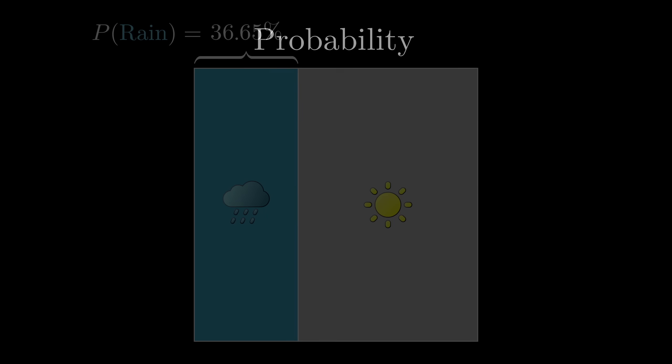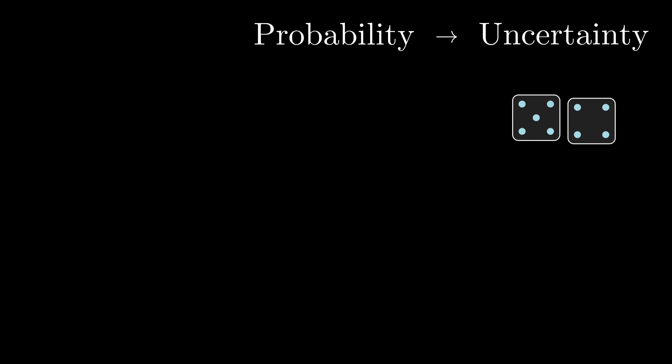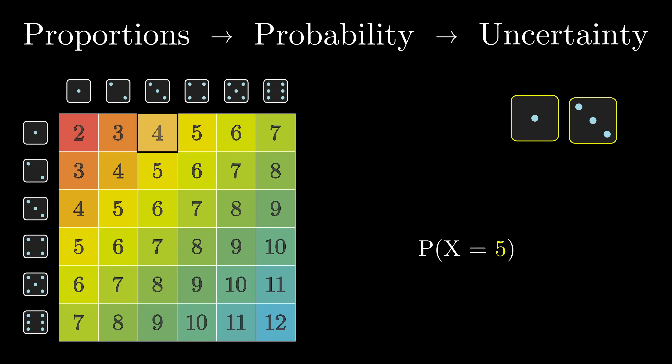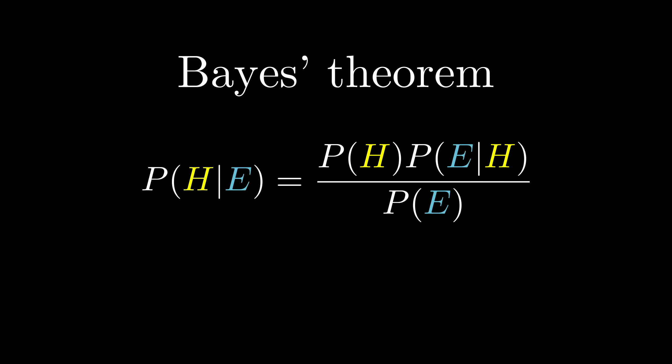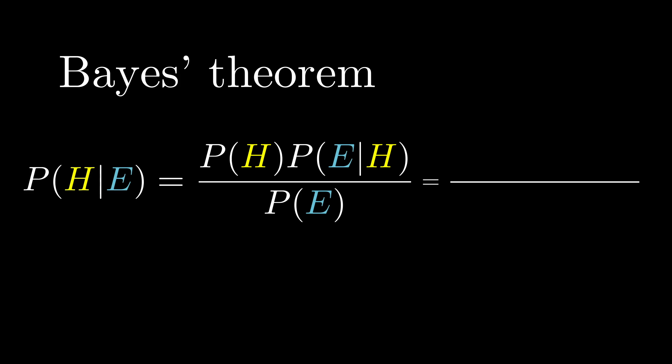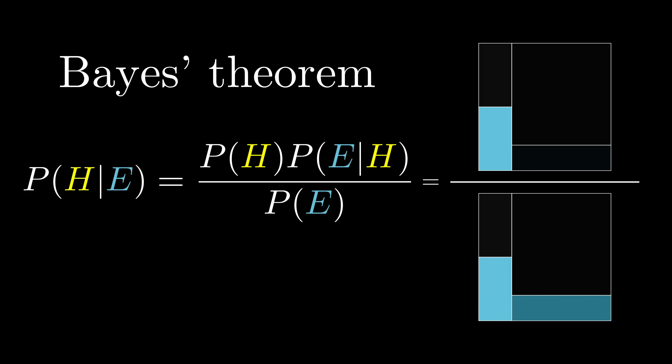You see, people often think about probability as being the study of uncertainty, and that is of course how it's applied in science. But the actual math of probability, where all the formulas come from, is just the math of proportions. And in that context, turning to geometry is exceedingly helpful. I mean, take a look at Bayes' theorem as a statement about proportions, whether that's proportions of people, of areas, whatever.